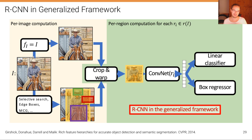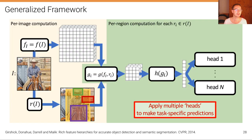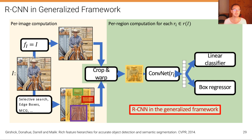Looking at RCNN in this generalized framework: the feature mapping is simply the identity function, copying the image as the feature representation. The region proposal function uses a classical, non-deep-learning algorithm like selective search. The combination function is a cropping and warping operation. The per-region computation is a full-fledged convolutional network. Then we have two heads: one for classification and one for bounding box refinement — the regression task.